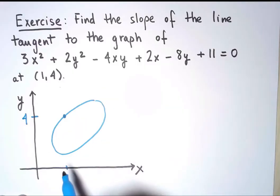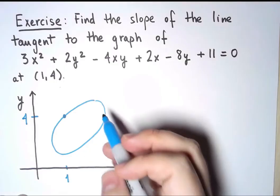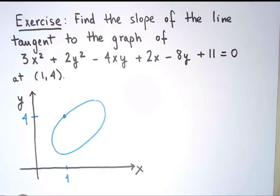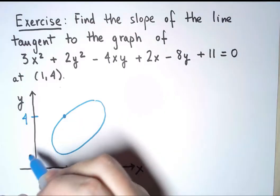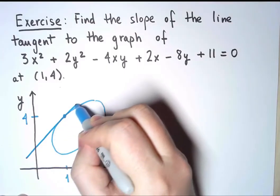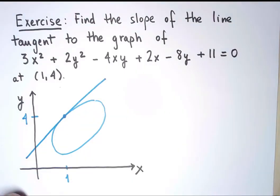Now, notice that this doesn't describe y as a function of x. For the same value of x, I have various values of y. But it doesn't matter. This is nevertheless a nice, smooth curve. And it makes sense to ask about the tangent line to this curve at this point, and what the slope of it is. That's what I want to do.